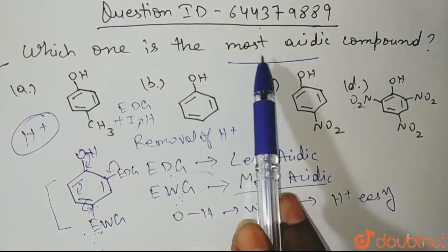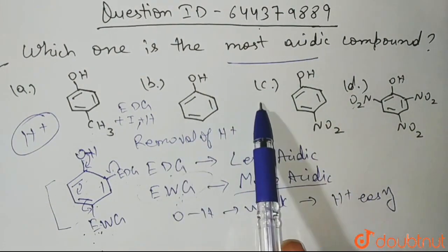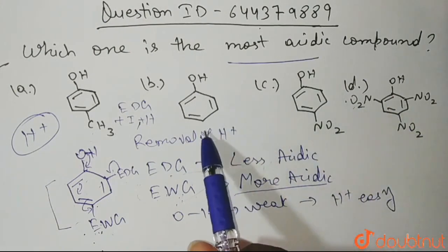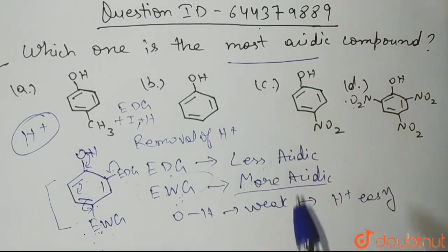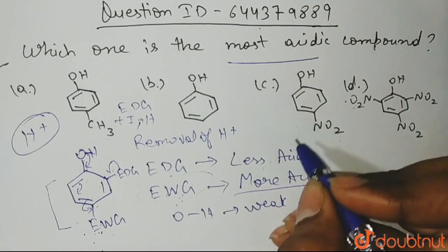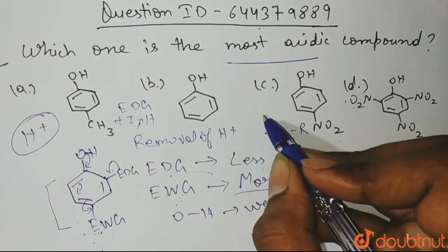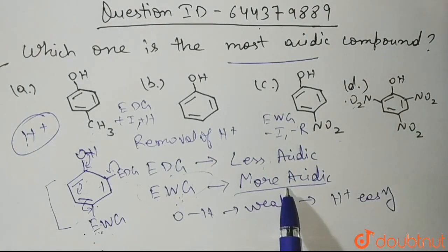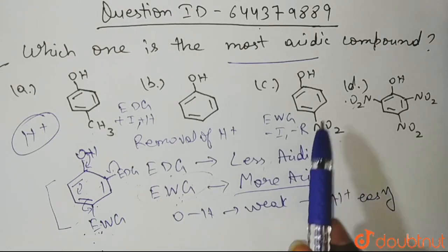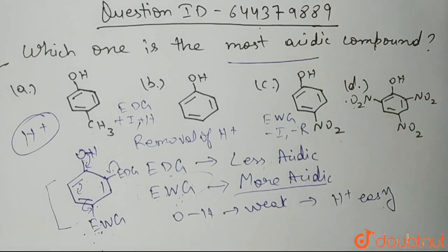We need to find the most acidic compound, not the order. This option is phenol with no substitution — no electron donating groups and no electron withdrawing groups. Now, looking at option C, NO2 is present, and we know that NO2 applies both −I (minus inductive) and −R (minus resonance) effects, acting as an electron withdrawing group. This withdraws electrons, weakening the O–H bond and making it more acidic. So option C will be more acidic than plain phenol or option A.